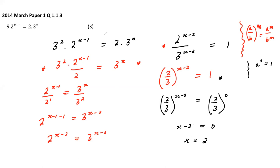Using the law that 'A over B to the power M' can be written as 'A to the power M over B to the power M', I can write this as 2 over 3, to the power x minus 2, equals 1. Since anything to the power zero is 1, I manipulate: 1 becomes 2 over 3 to the power 0. Now the bases are the same - drop the powers: x minus 2 equals 0, so x equals 2.